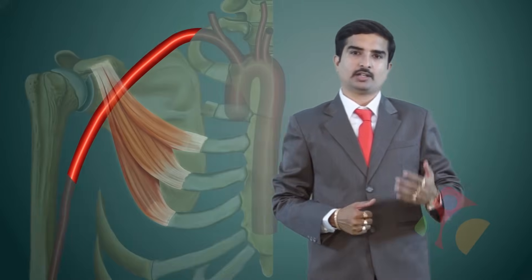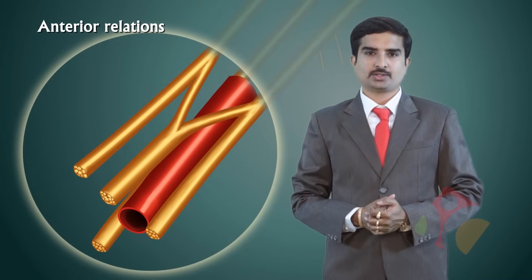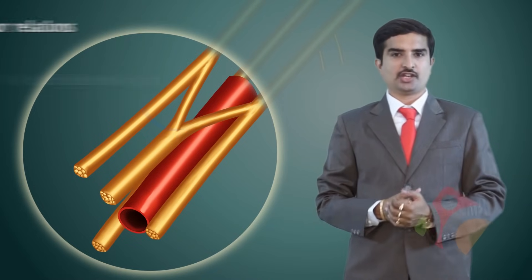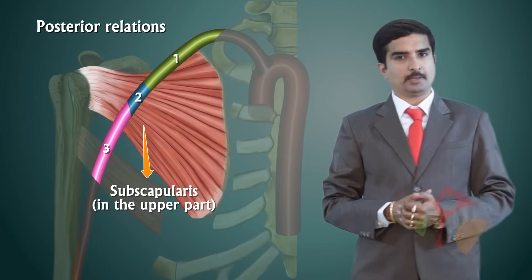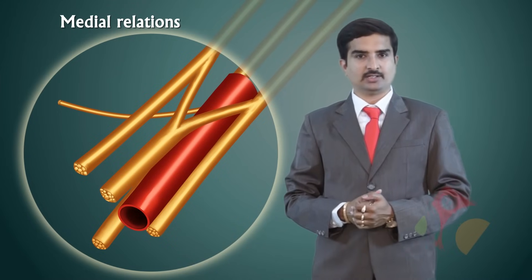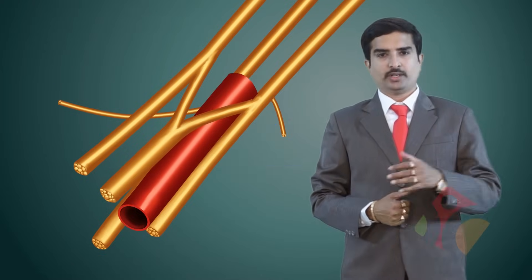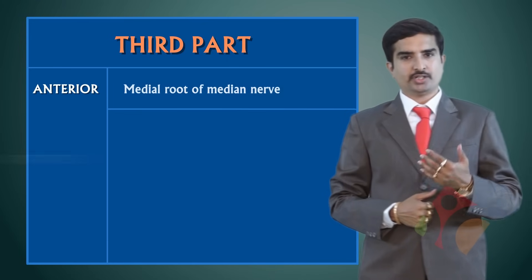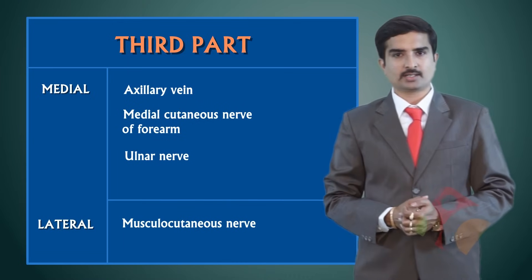Now let us see the relations of the third part of the axillary artery. The anterior relations are the medial root of the median nerve. The posterior relations are the axillary nerve, the radial nerve, and the subscapularis in its upper part and the teres major in its lower part. The medial relations are the axillary vein along with the medial cutaneous nerve of the forearm. Laterally, it is related to the musculocutaneous nerve.